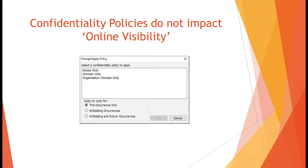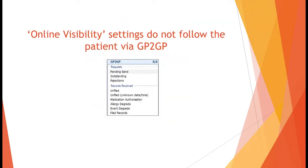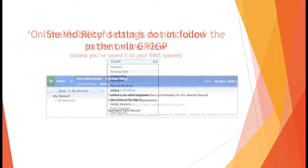Unless it's restricted by the online visibility option. A record transferred via GP2GP will not include any online visibility restrictions that you put onto it, so you may wish to implement local procedures regarding advising a practice to which a patient is moving of any restrictions that are in place. Hopefully other practices will also share this information with you for your incoming patients.